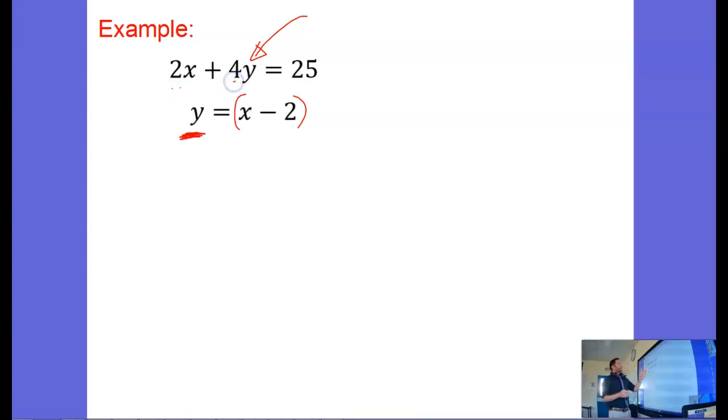At the moment I've got two letters in this equation, x's and y's, it's hard to solve. Once I've got just x's, I'm going to be able to solve it. So I'm going to take this information, y equals x minus 2, and I'm going to substitute it into that top equation. So 2x plus 4, and y is x minus 2, so I just replace the y with x minus 2, equals 25.